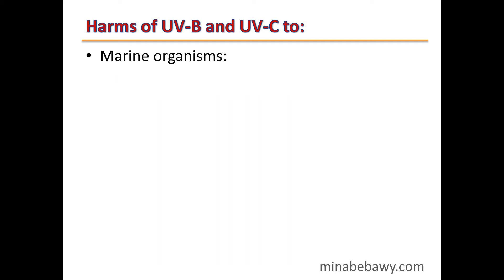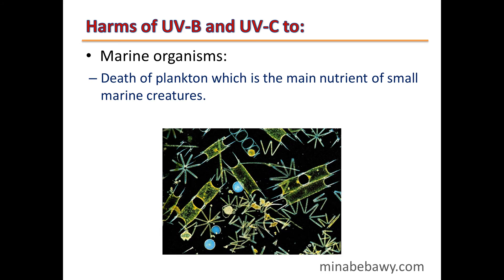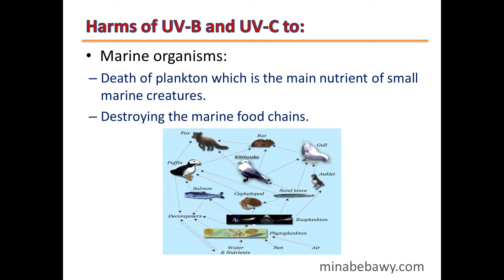Harms of UVB and UVC to marine organisms: they cause the death of planktons, which is the main source of food for small marine creatures. This will cause the destruction of marine food chains.